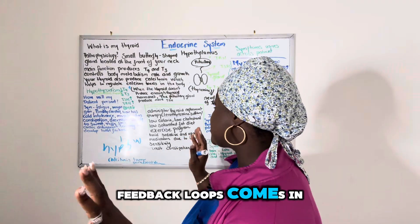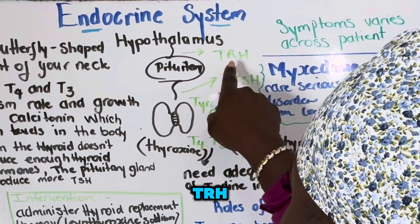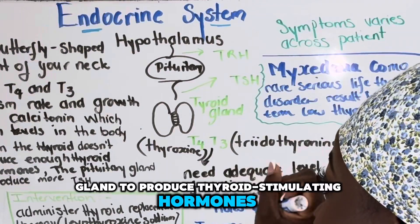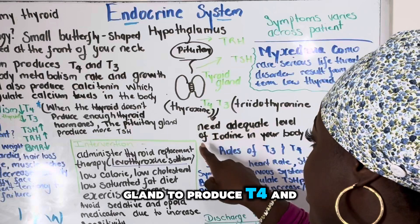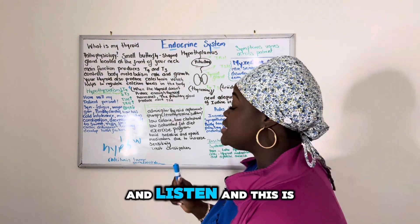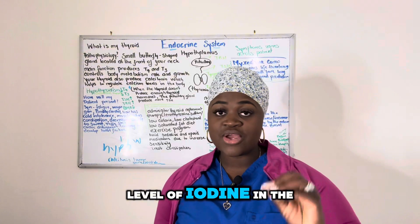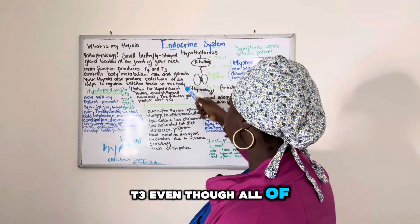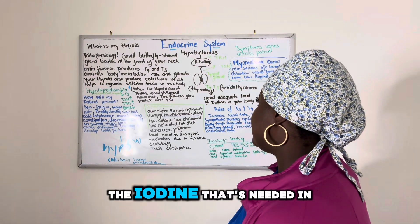The hypothalamus in the brain controls how much TRH — thyroid-releasing hormone — is produced. It stimulates the pituitary gland to produce thyroid-stimulating hormone (TSH), which then stimulates the thyroid gland to produce T4 and T3. A key point: T4 and T3 need adequate levels of iodine in the body. In order for the thyroid to function properly and make enough T4 and T3, we need enough iodine — and a lot of NCLEX and nursing questions will come up about that.